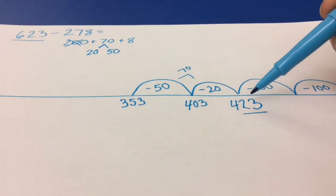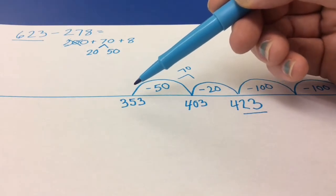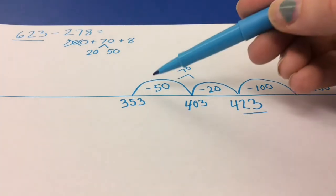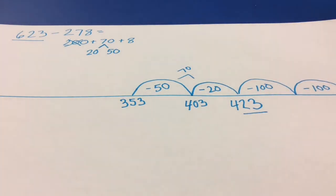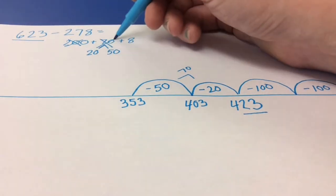If I had started here and tried to take away the 70, it would have taken me a lot longer. But instead, when I break apart the 70 into a 20 and a 50, it makes it a lot easier for me to do.